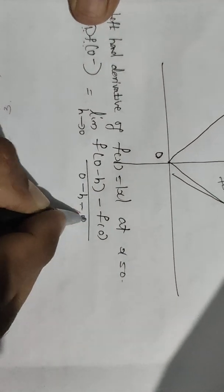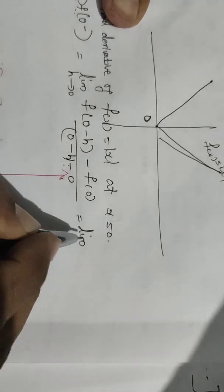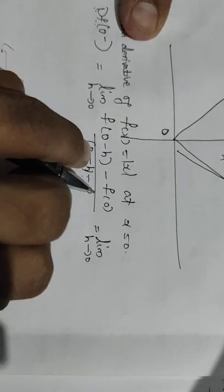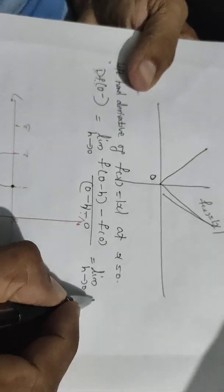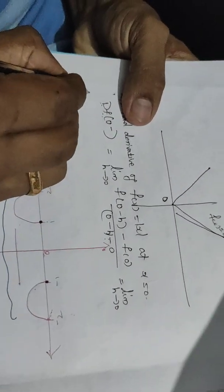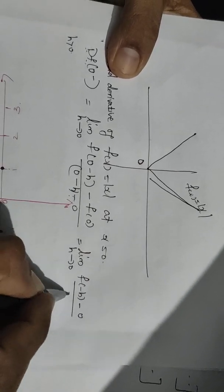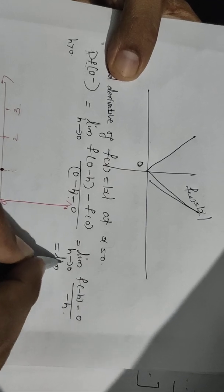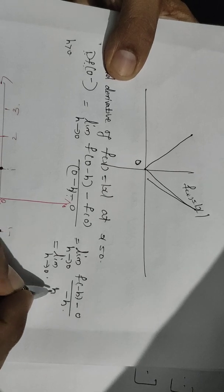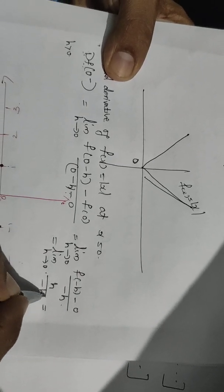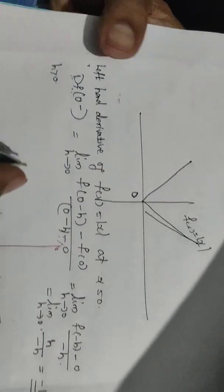This is 0 minus h minus 0. This is equal to the limit as h tends to 0 of (0 minus h). So f of minus h equals a positive quantity h. This is equal to h divided by minus h, which equals minus 1. So the left derivative of f at 0 is equal to minus 1.